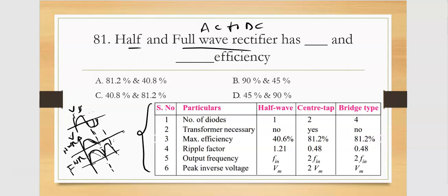The efficiency in half-wave rectifier is about 40.8% because it's just about half cycle. Full-wave is 81.2%. Important points: number of diodes in half-wave rectifier is 1, and full-wave rectifier bridge type has 4. The full-wave center tap has only 2 diodes.